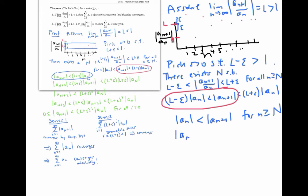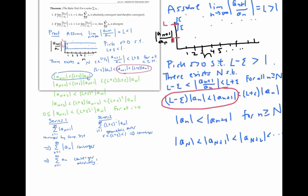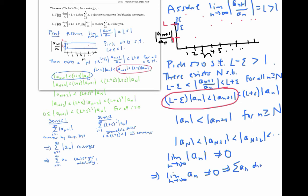This means that the absolute value of a sub capital N is less than the absolute value of a sub (capital N plus one), which is less than the absolute value of a sub (capital N plus two), and so on. So my sequence of terms is actually ultimately an increasing sequence of positive numbers. Therefore my sequence of terms cannot converge to zero — the limit as little n goes to infinity of the absolute value of a sub n cannot be zero, and so the limit of a sub n cannot be zero either. That means my original series cannot converge; it has to diverge by the divergence test.